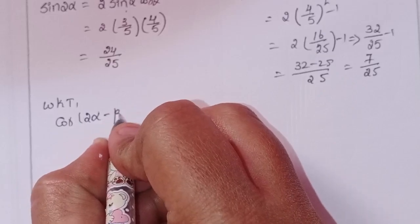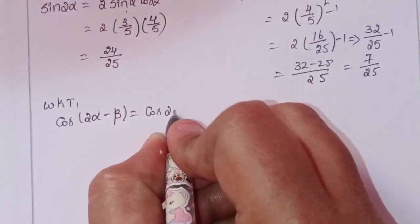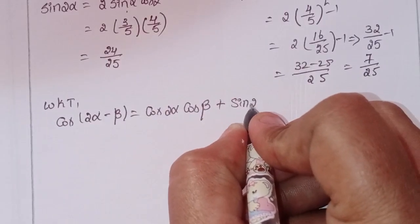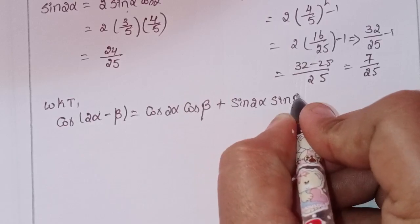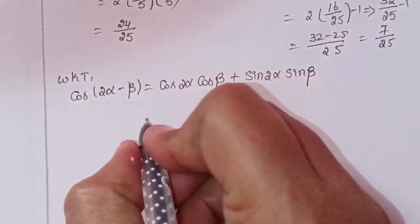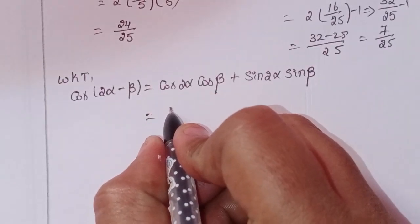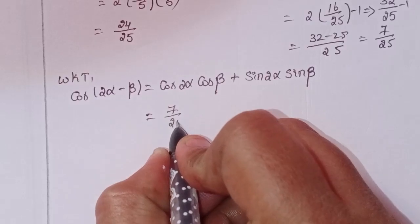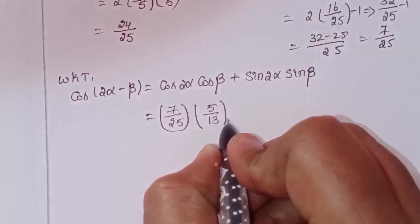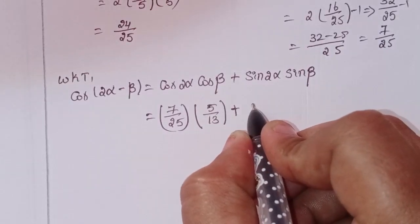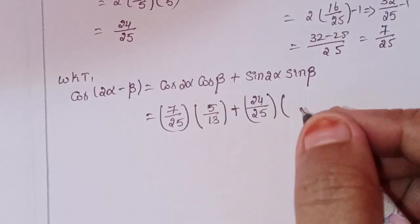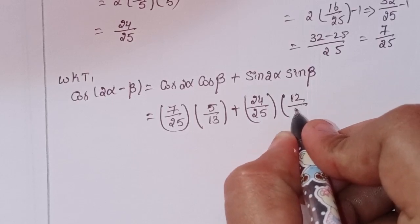Now we know that cos(2α − β) = cos(2α)·cos(β) + sin(2α)·sin(β). Here 2 is the number, so cos(2α) value is 7/25, cos(β) value is 5/13, sin(2α) value is 24/25, and sin(β) value is 12/13.